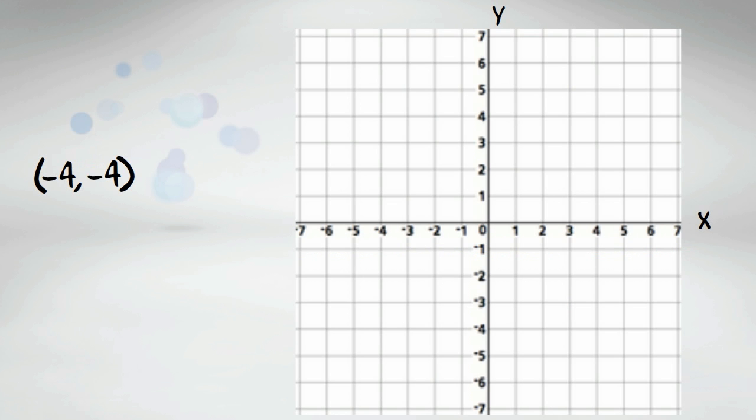Alright, for our last example, we have the coordinate. Negative 4 is the location on both the x and the y-axis this time. Where the two lines intersect, there is a point.